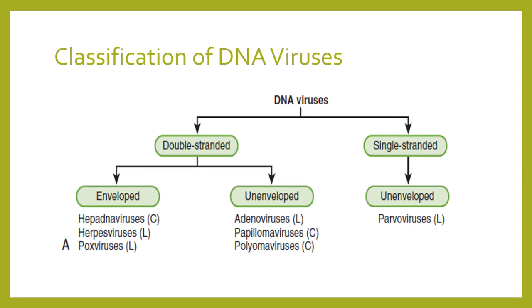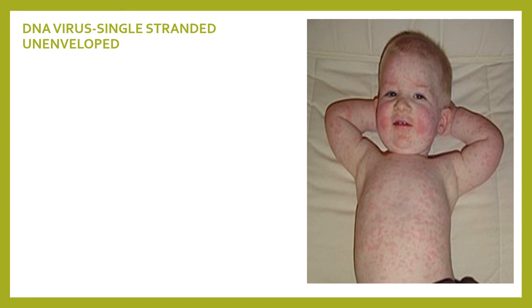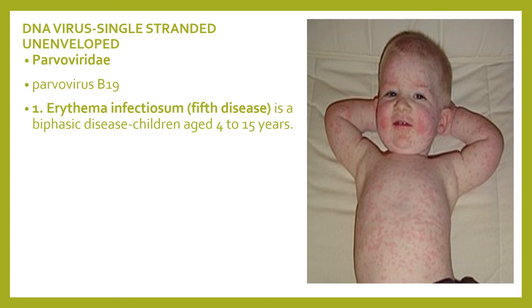The single-stranded unenveloped DNA virus is parvovirus. Parvovirus B19 causes erythema infectiosum, also known as fifth disease, a biphasic illness common in children aged 4 to 15 years — distinct from roseola, which is caused by human herpesvirus 6 in infants. The first phase involves non-specific flu-like symptoms and decreased hemoglobin levels. The second immune-mediated phase occurs 2 to 3 weeks later and is characterized by a slapped-cheek rash on the face and a maculopapular rash on the arms and legs, lasting one to two weeks.